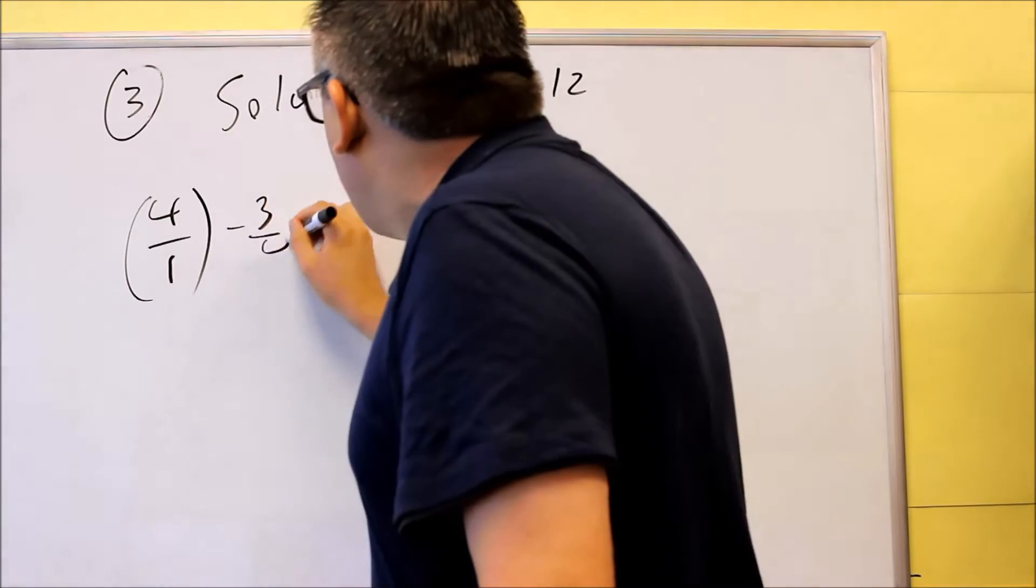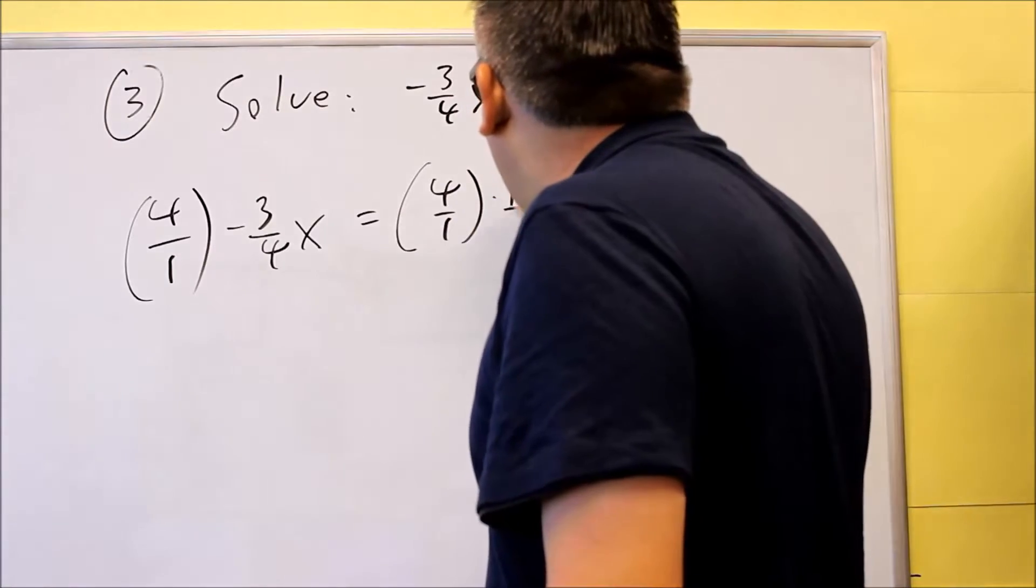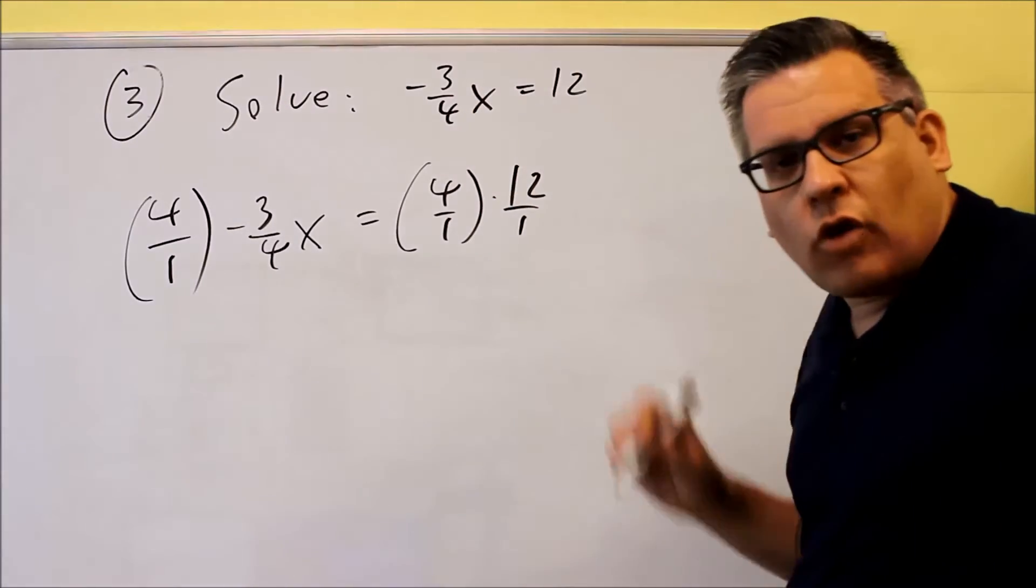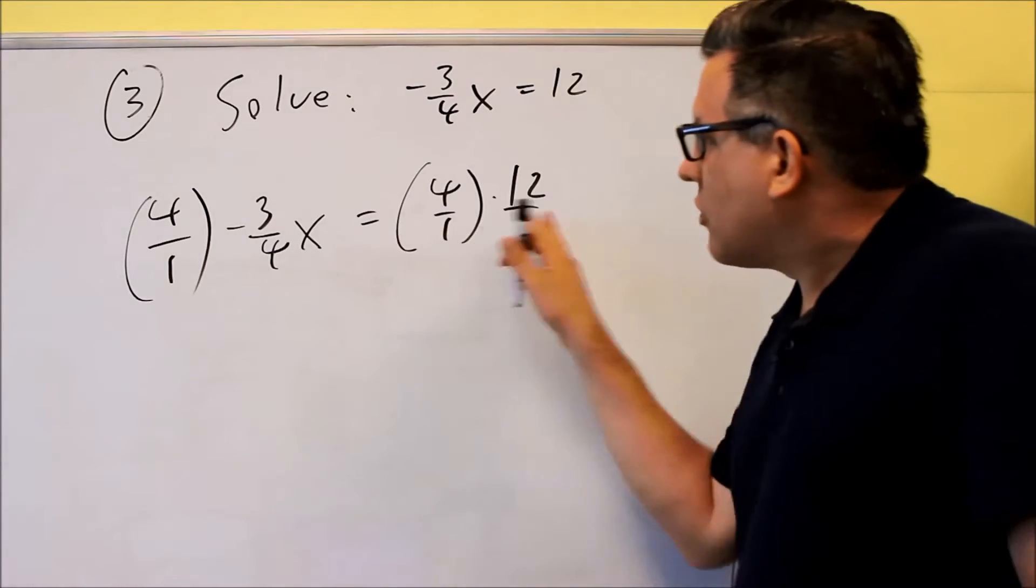Negative 3 fourths X. Over here, I have 4 over 1, and I'm multiplying it by 12, and once again, I'll write that as 12 over 1. So I'm putting a 4 on both sides of the equation. Everything else is the same.